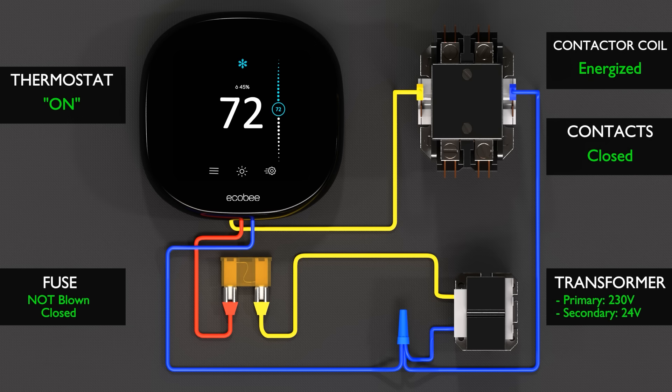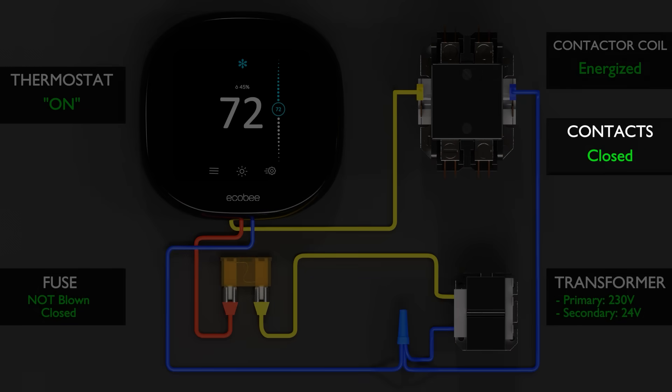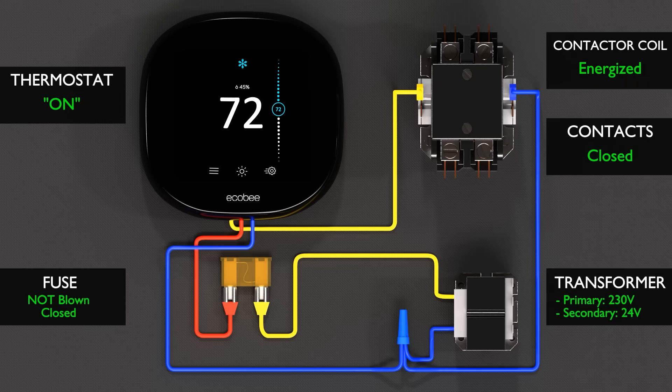Here we show the normal state of operation. When everything's working properly, the thermostat is on, the contactor coil energizes, the contacts close, and the fuse is not blown. We have neither a short or an open.